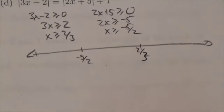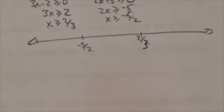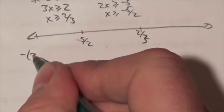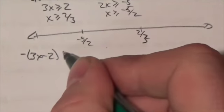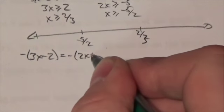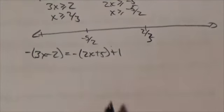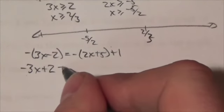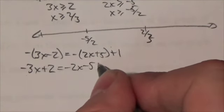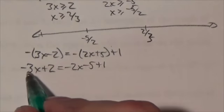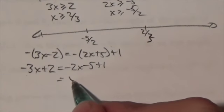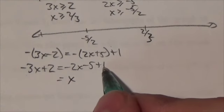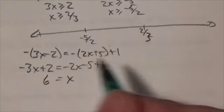Now, if we are to the left of negative 5 halves, both of these functions are going to change signs here. So it'll be negative of 3x minus 2 equals the negative of 2x plus 5 plus 1. So let's solve that. So negative 3x plus 2 is equal to negative 2x minus 5 plus 1. I'll bring the 3x over and it becomes x over here. Negative 5 plus 1 is negative 4. Add the 4 so it becomes 6. x equals 6.